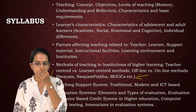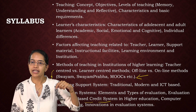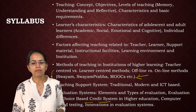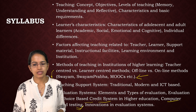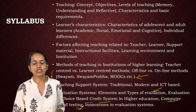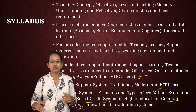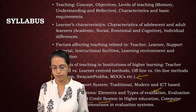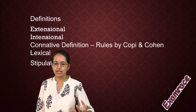Very important. CBCS is the choice-based credit system — again, we have a separate video on that. Computer-based testing — again a separate video. And then types of evaluation, which includes formative and summative. All those are very important topics. So let's begin with the very first.